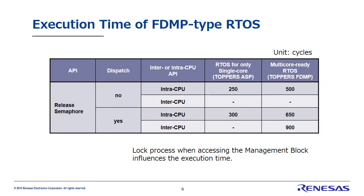Let's talk a little more about that overhead. This chart shows API execution time, comparing execution time between single-core RTOS and multi-core ready RTOS. The execution time measured was for the semaphore release API. If there is a dispatch when the semaphore release API is executed, the single-core RTOS takes 300 cycles for execution time, and the multi-core ready RTOS takes 650 cycles. In multi-core ready RTOS, the management block is locked during access because it's accessible to multiple cores, leading to overhead. Furthermore, tasks running on different CPUs are also communicating and synchronizing, so running those APIs can cause this process to take 900 cycles. The increased overhead from multi-core ready RTOS can be an enormous problem.